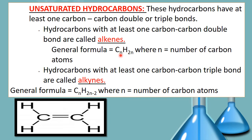So whatever will be the number of carbon atoms, N actually denotes that number. This general formula helps you to calculate the formula of alkenes. But if any hydrocarbon has a triple bond between carbon and carbon atom, it will be called as alkyne. And the general formula for alkynes will be CnH2n minus 2. Again, N represents the number of carbon atoms.